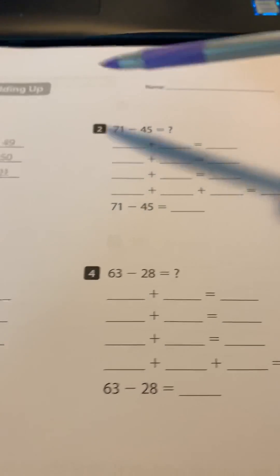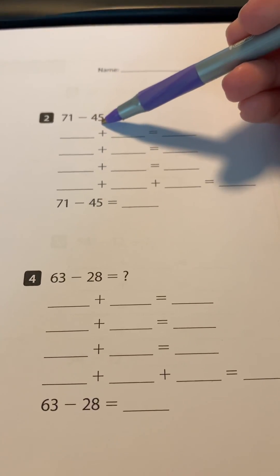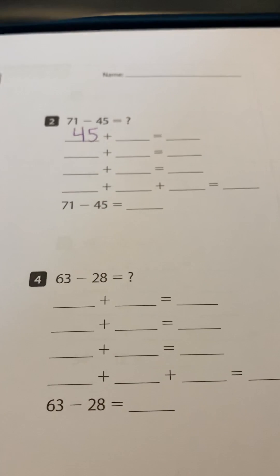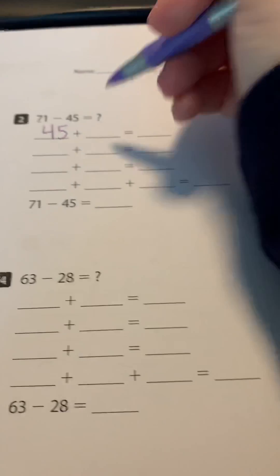I'm going to first start with number two over here. Remember, they do an example for you to help you. So remember, the goal is that you want to start with the smallest number, so 45. So I'm going to put 45 here, and I want to add up to get 71. So first, I might add five to get 50.